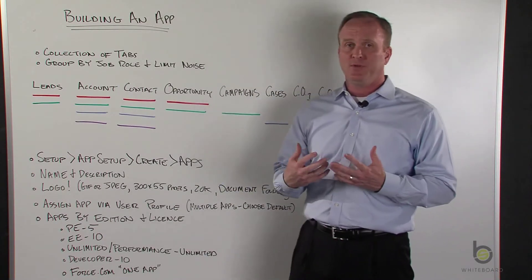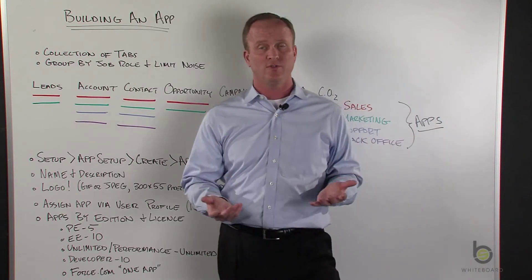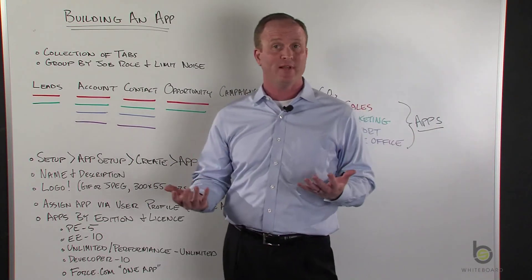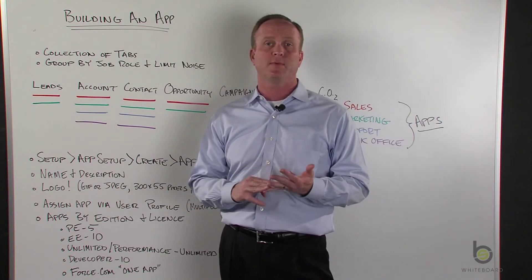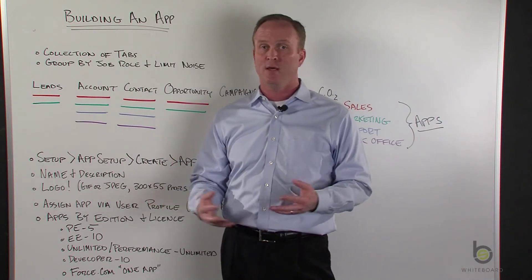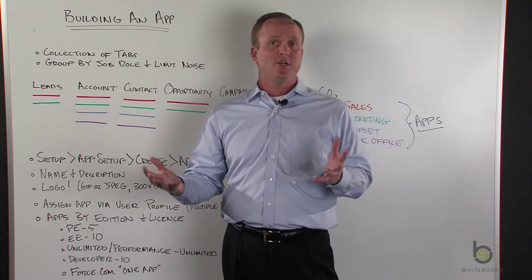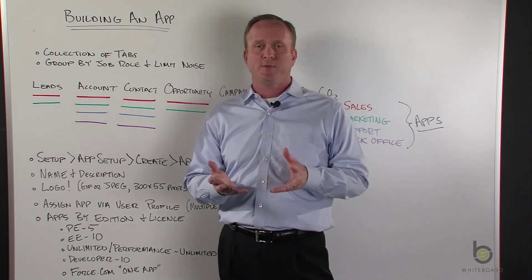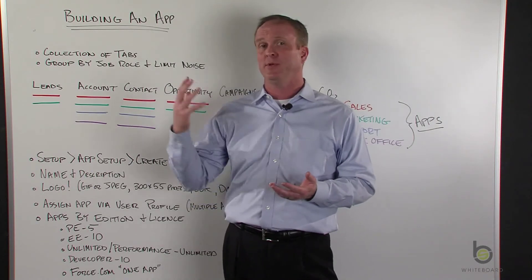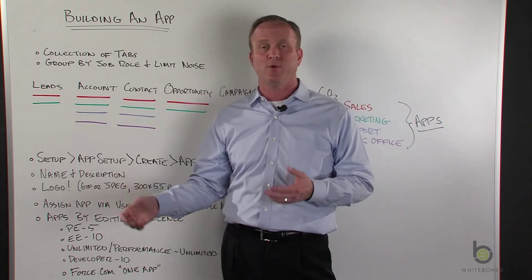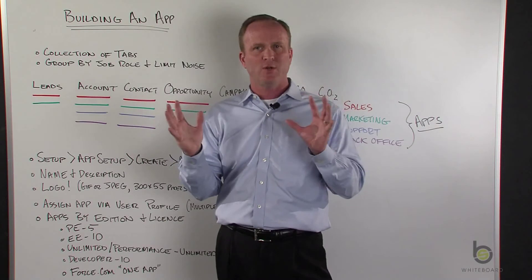A custom app is really nothing more than a collection of tabs. As you grow in the Salesforce platform, you end up having a lot of tabs — all your standard tabs like leads, accounts, contacts, opportunity, cases — but then you also might have a bunch of custom tabs for your custom objects. You really want to tailor that experience to your users so they're only seeing the tabs pertinent to their job role. Your back office people see only their tabs, your sales people see only their tabs — kind of reducing the noise on the page.